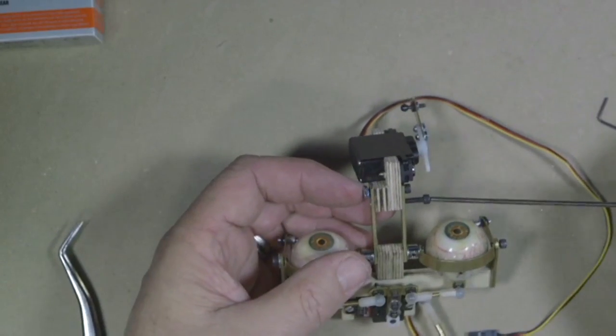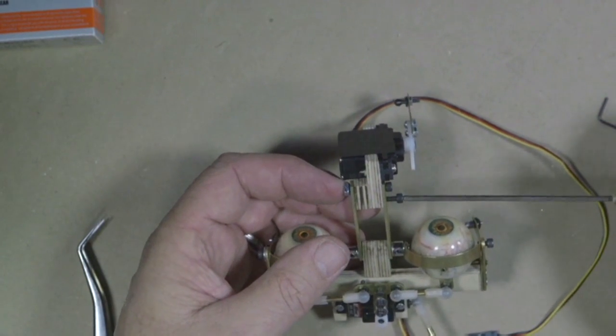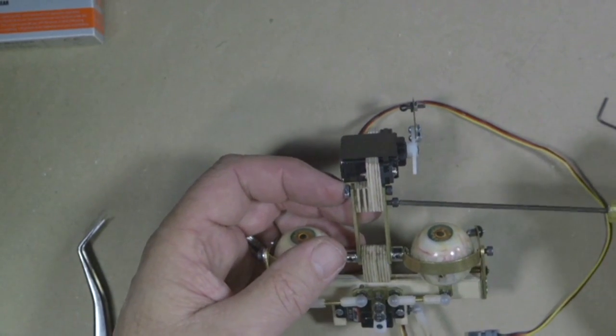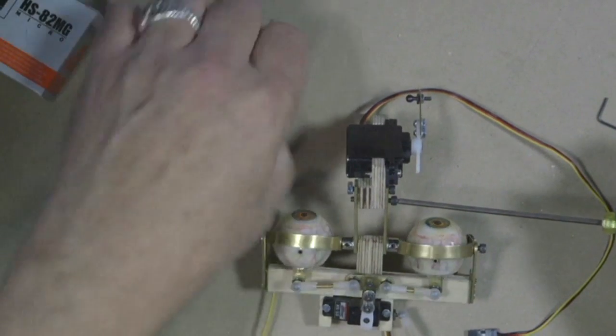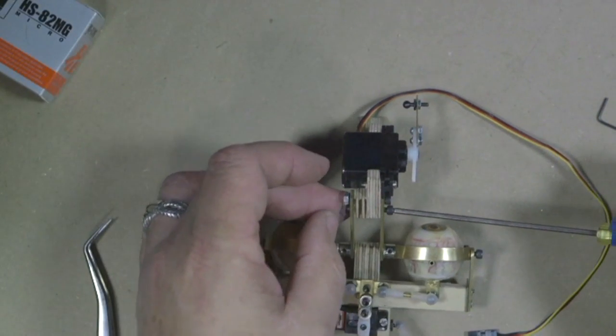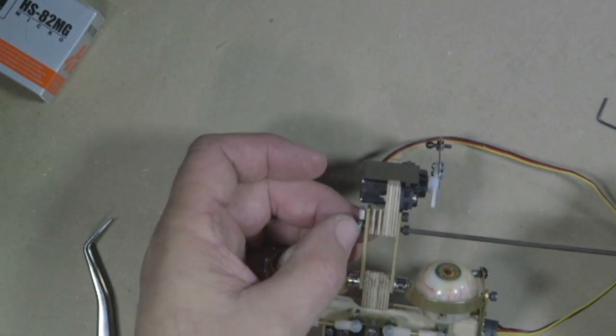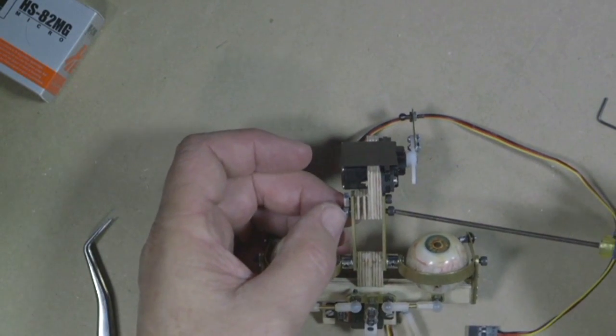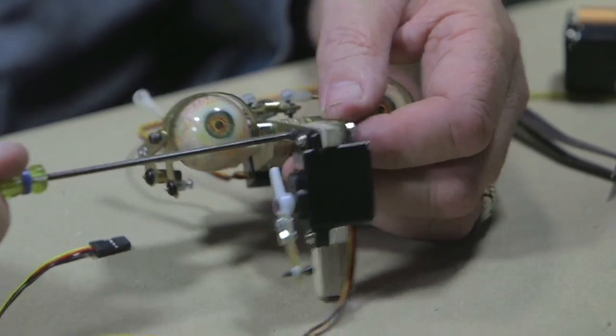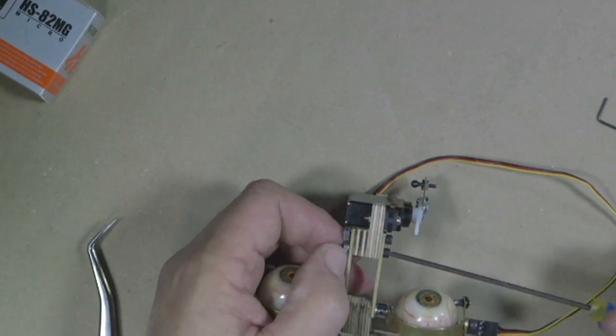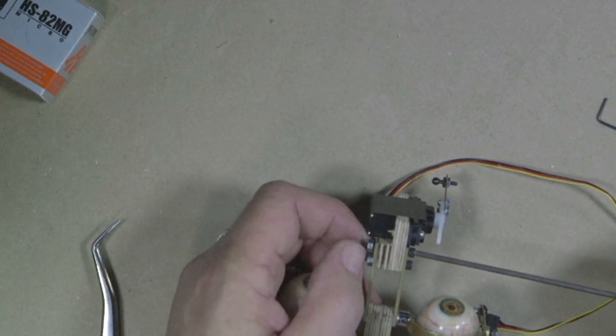So these two pieces of brass are just sandwiching onto this double piece of plywood down here. So I'll get that in there. Nice and tight.